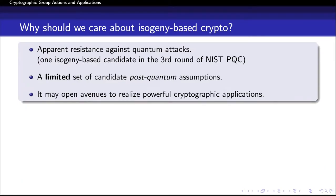A higher-level question one may ask is: why should we care about isogeny-based assumptions and their cryptographic implications? First of all, these assumptions have apparent resistance against quantum algorithms. In fact, one of the third-round post-quantum candidates is an isogeny-based scheme. Secondly, we have a limited set of candidate post-quantum assumptions, and so if for some reason one or more candidate assumptions cannot be used, we may rely on isogeny-based assumptions.